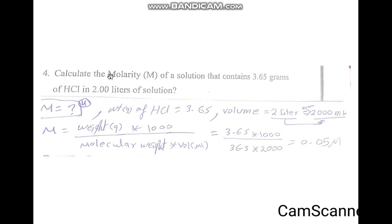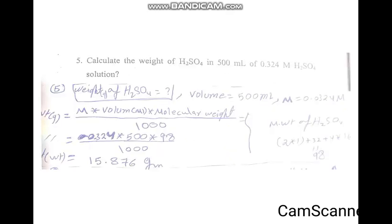2 liters means we calculate the molarity. The weight of HCl and volume — we will use the formula for molarity: molarity equals weight multiplied by 1000, divided by molecular weight, multiplied by volume. The weight and the molecular weight are given. We change volume to 2000 ml, so the molarity will be 0.05 mol.